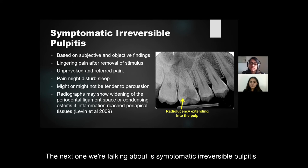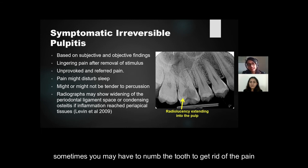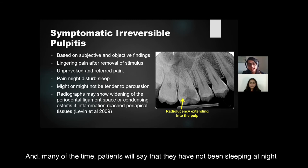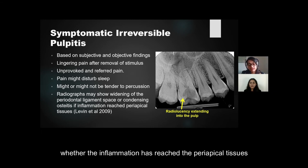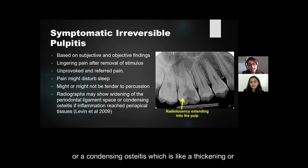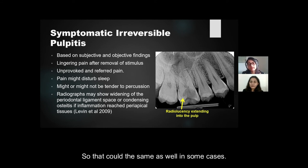Symptomatic irreversible pulpitis is based on subjective and objective findings. The pain lingers even after the stimulus is removed, and sometimes you need to anesthetize the tooth to relieve the patient's pain — indicating the tooth is irreversibly damaged. The patient often reports not sleeping at night and experiences unprovoked, lingering pain. Radiographic findings may or may not be present depending on whether inflammation has reached the periapical tissues. There may be tenderness to percussion, widening of the periodontal ligament space, or condensing osteitis — a thickening or radio-opacity around the root apex.